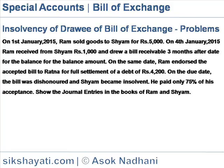Insolvency of dishonored bill of exchange. On 1st January 2015, Ram sold goods to Sam for Rs. 5,000. On 4th January 2015, Ram received from Sam Rs. 1,000 and drew a bill receivable three months after date for the balance amount. On the same date, Ram endorsed the accepted bill to Ratna for full settlement of a debt of Rs. 4,200. On the due date, the bill was dishonored and Sam became insolvent. He paid only 75% of his acceptance.